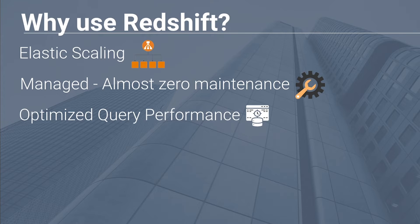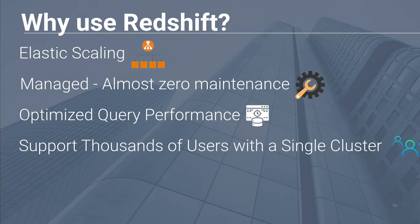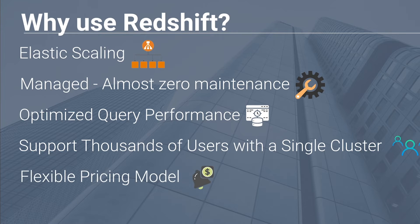You get optimized query performance, meaning very consistent and reliable results for frequently running queries. You can also support thousands of users within a single cluster by scaling up and adding more nodes. It has a flexible pricing model — on-demand is more expensive, while reserved instances require a one-year commitment. There's also a third option called Redshift Spectrum, which I'll get into a bit later.